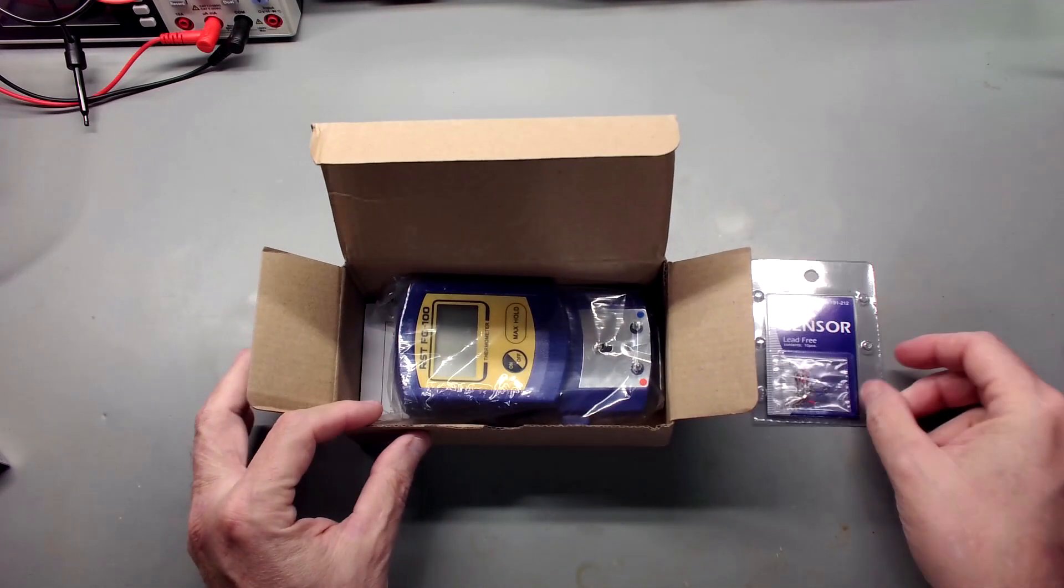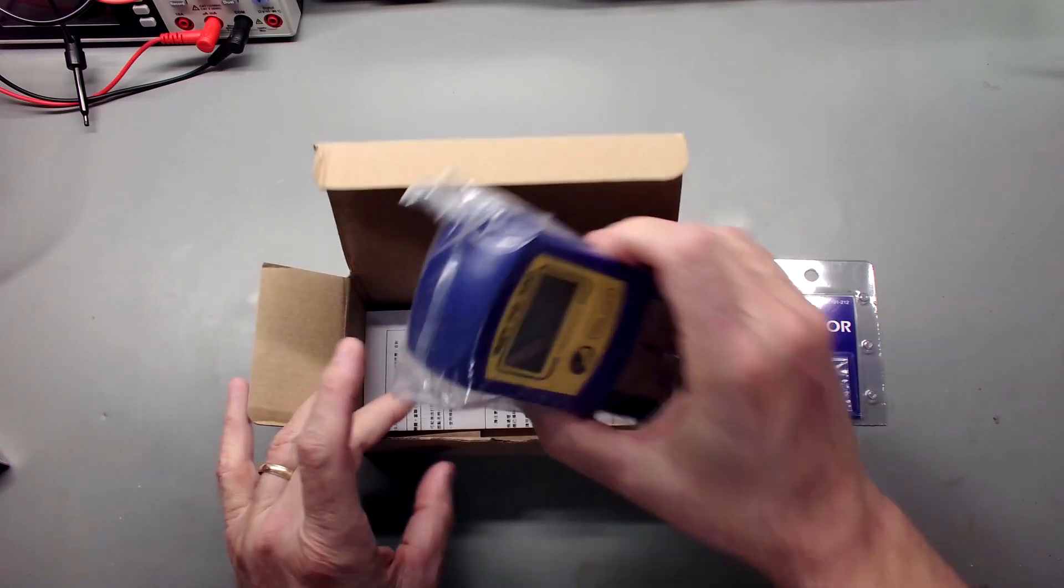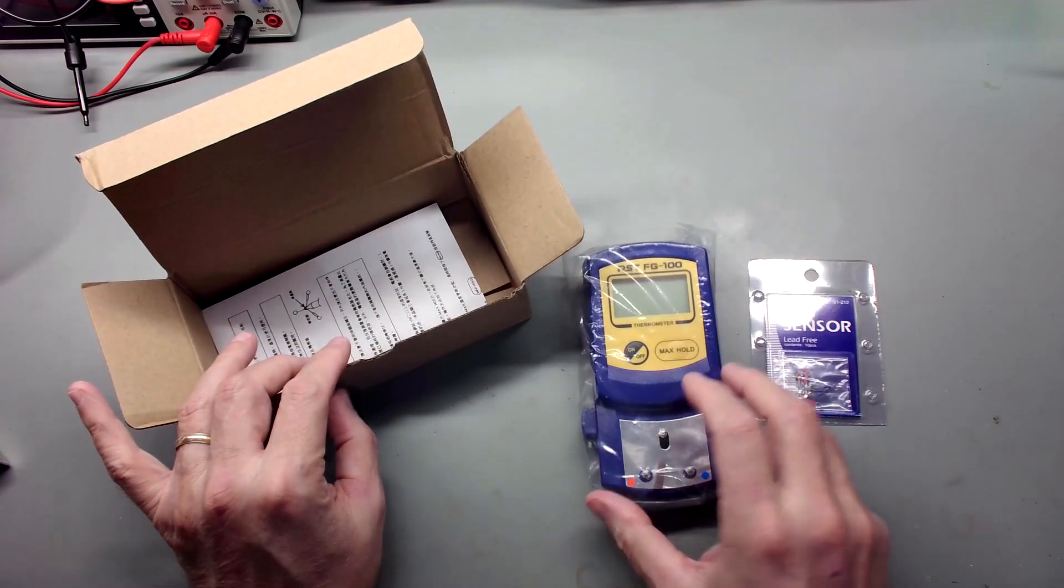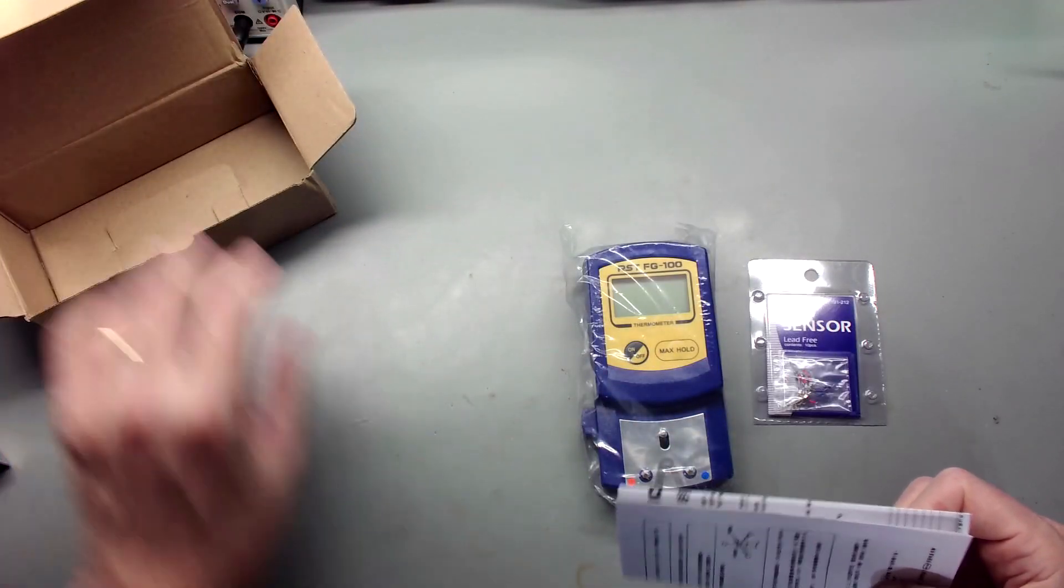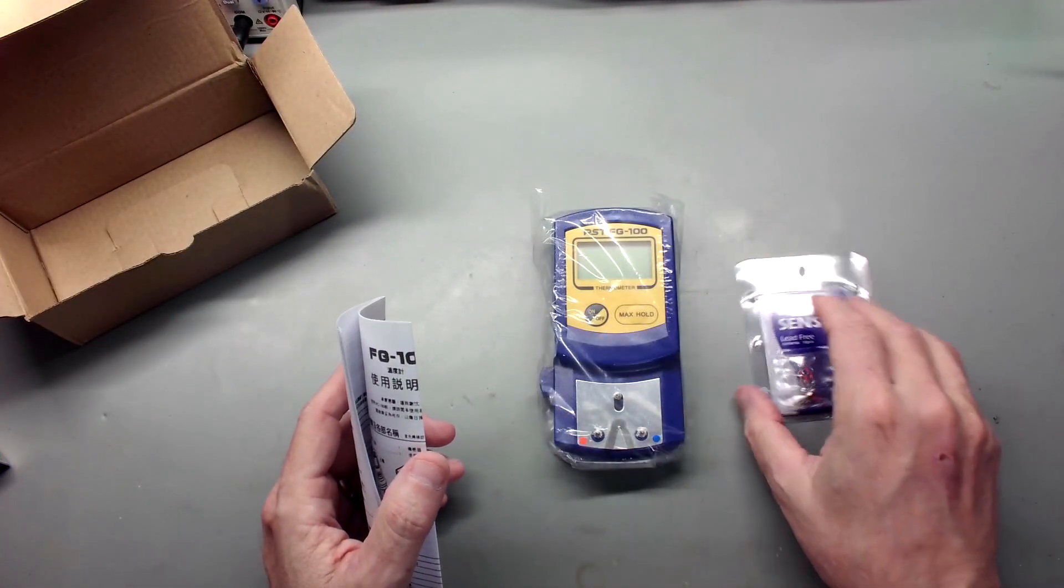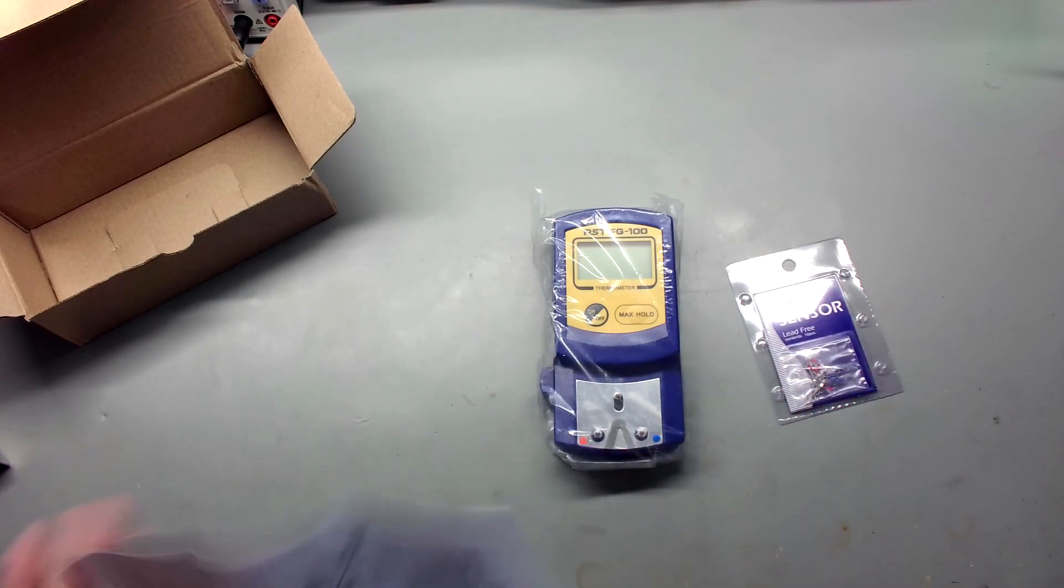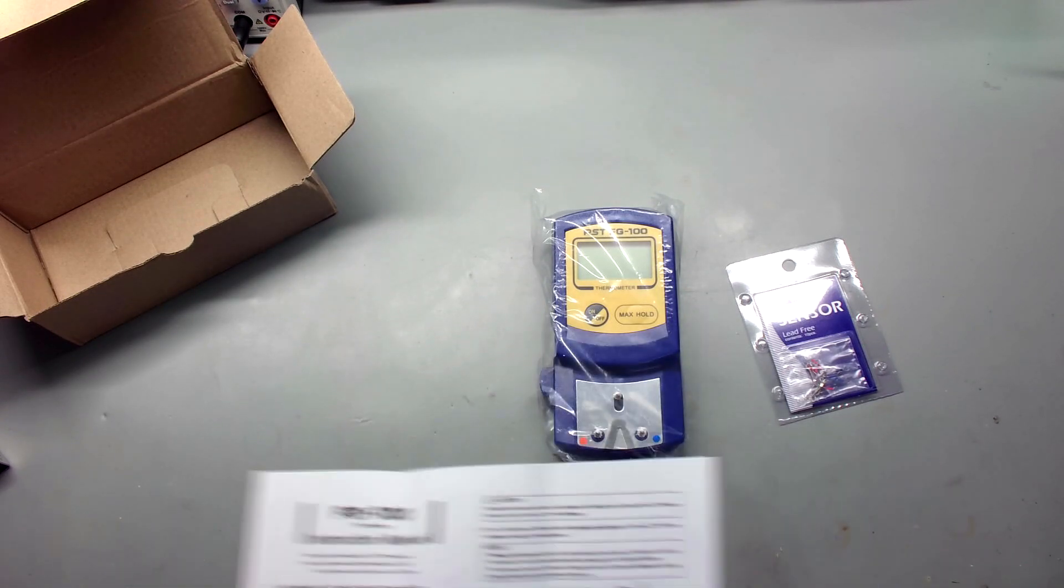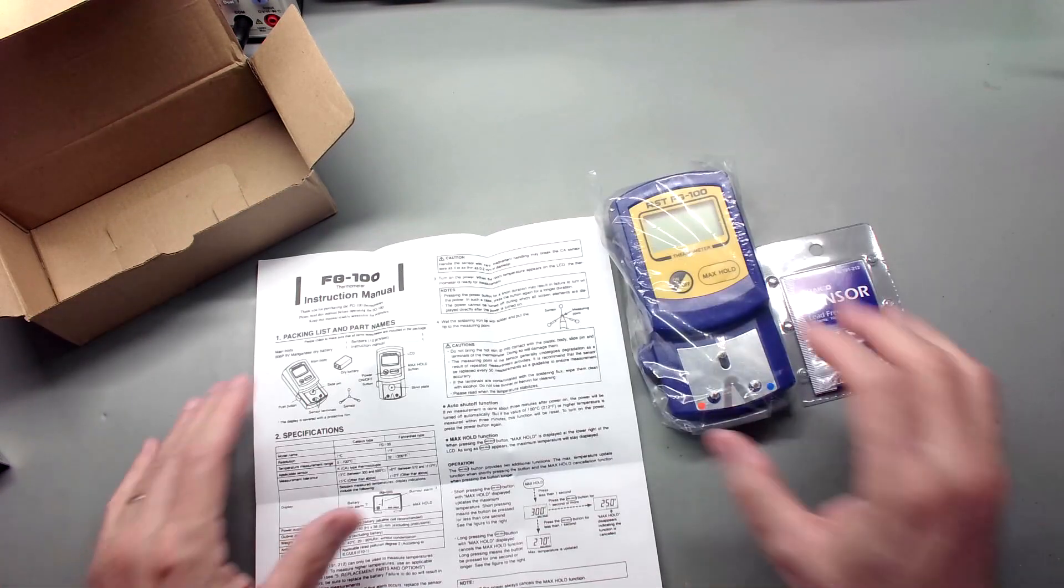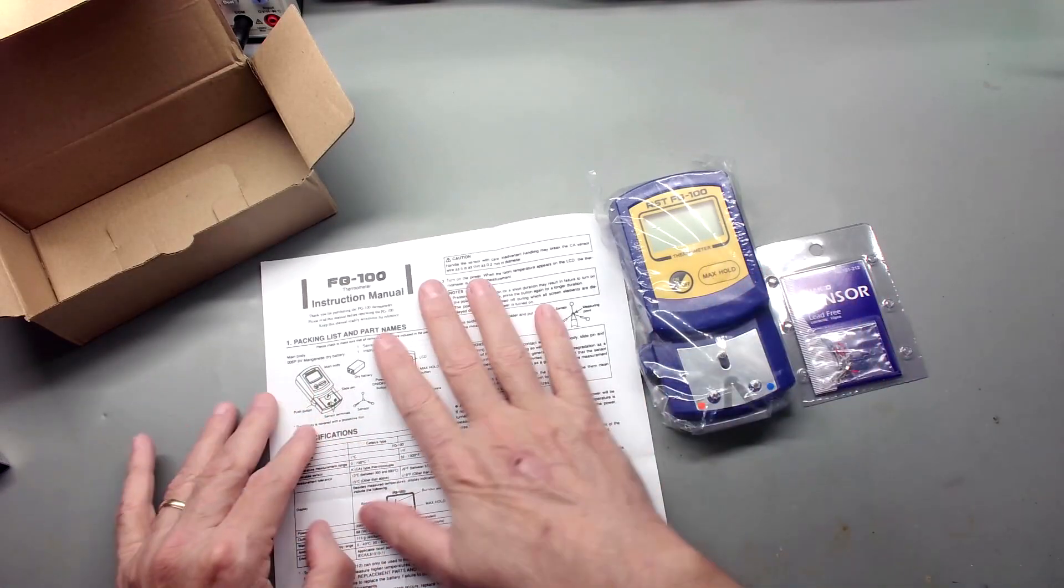It comes with some sensors. It's a soldering iron calibration meter. It was really cheap, not something I couldn't live without, but for $10 I thought it would be neat to be able to check your soldering irons and see how accurate they are. I don't know a lot about it. I thought for $10 we'd give it a shot and see what we think.